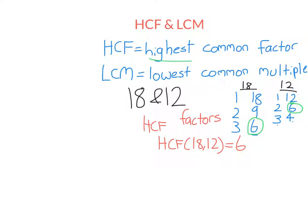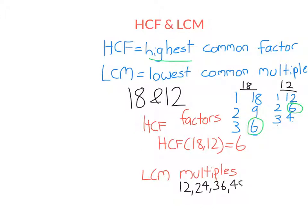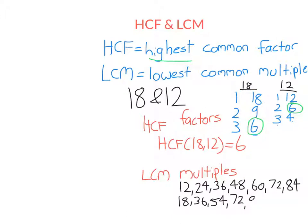Now let's look at the lowest common multiple. We can do something quite similar — instead of listing factors, we list the multiples of 12 and 18 and find the lowest number that appears in each list. The multiples of 12: start at 12 and keep going — let's list the first seven or so. Then the multiples of 18: 18, 36, 54. If you're stuck, use your calculator. Then 18 times 4, 18 times 5, 18 times 6, 18 times 7.